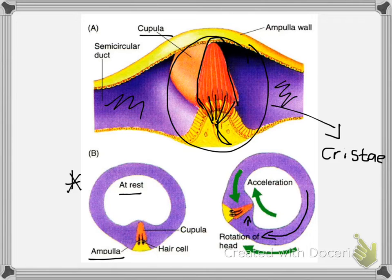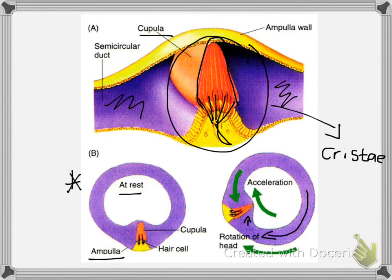You have three of these cristae, which means all three can be stimulated simultaneously depending on the direction the body is moving. For example, if you've ever been on a roller coaster, you would be stimulating all three semicircular canals, sensing how your body moves at different speeds and in different directions. This is exactly how your body maintains balance while running and changing direction quickly — it is your semicircular canals that allow you to sense that change in direction without losing your balance.